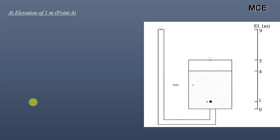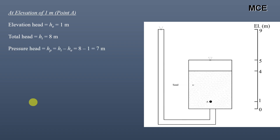At point A, the elevation head is 1 meter and the total head calculated in the previous step is 8 meters. So the pressure head at point A is 8 minus 1, which equals 7 meters.